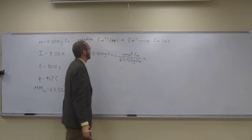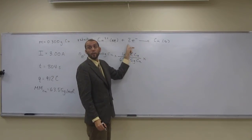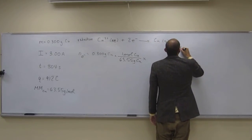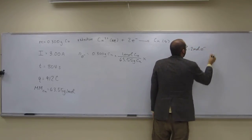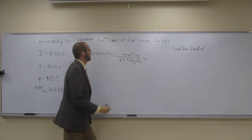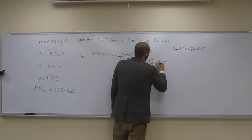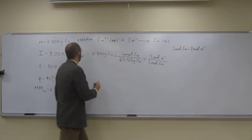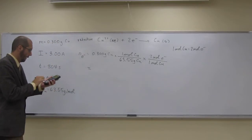So if we look at our reaction equation, right, we see for every one mole of copper, we've got two moles of electrons. So we can write that down. So for every one mole of copper, two moles of electrons. So that's going to give us the number of moles of electrons. Let's go ahead and calculate that out.